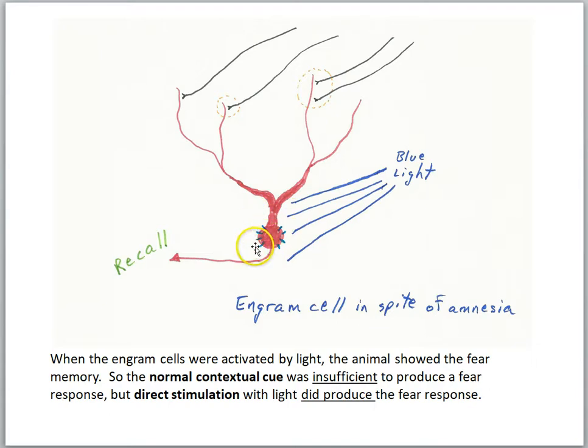Now here's where the optogenetics comes in. They allow these cells to insert those light-activated proteins. So notice, remember, the synapses are weak here. So they trained the animal and then gave the drug that blocks protein synthesis. So here we have the question, is this cell still an engram cell, even though the animal seems to have amnesia if you just put it back in the chamber?